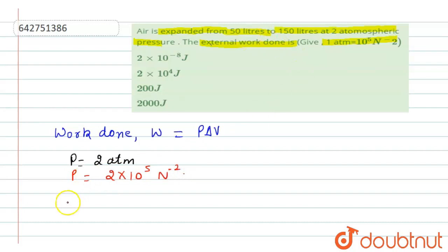And here the volume, let's find out the change in volume. So it expanded from 50 liter to 150, means final minus initial, 150 minus 50. This is equals to 100 liter. Because this is in per Newton scale,